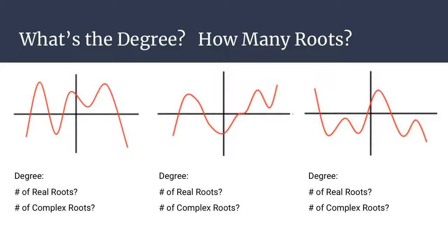Here are some examples you'll be expected to do. For the first graph, we focus on the degree, the number of real roots, and the number of complex roots. The first graph travels in six different directions, so it has a degree of six. Looking for x-intercepts, we have one, two, three, and four — so there are four real roots. Now for complex roots, we look for parabolas opening away from the x-axis. Several parabola pieces open toward the x-axis, but the one in the middle opens away, and that gives us two complex roots.